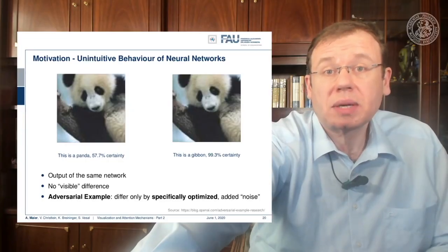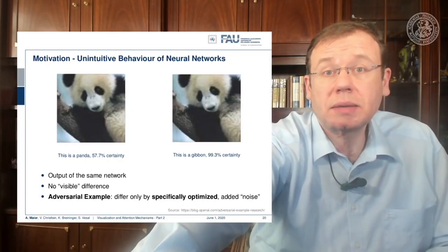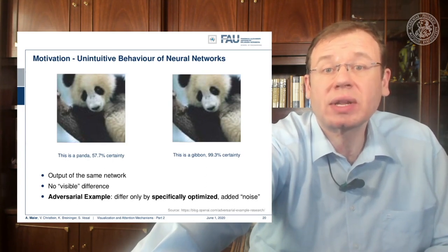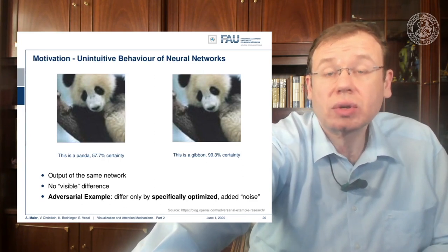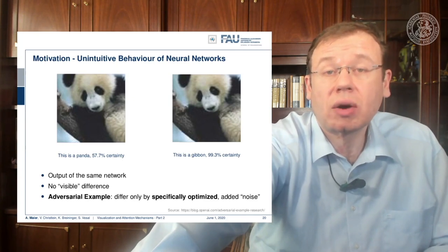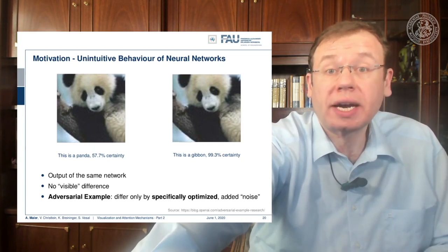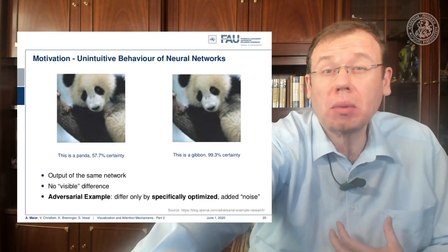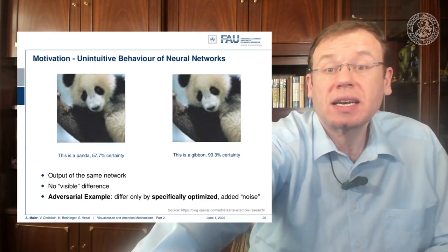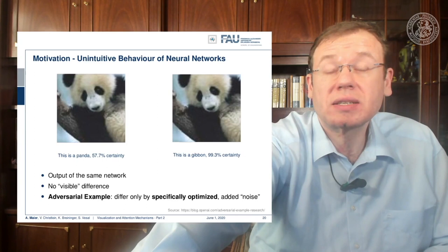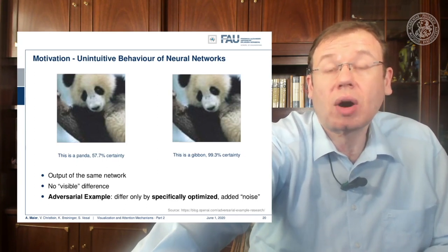Another big problem you encounter in machine learning and deep learning systems are adversarial examples, which result in unintuitive behavior. Here are two images. For the left image, our neural network believes at a confidence of 57% that this is a panda. On the right image, which looks almost the same to us, it is 99.3% certain that this is a gibbon. How can this be true?